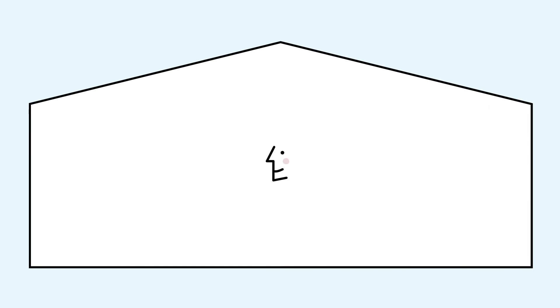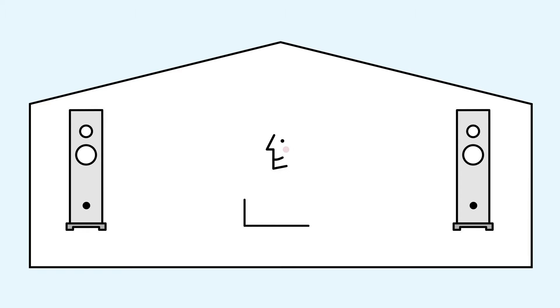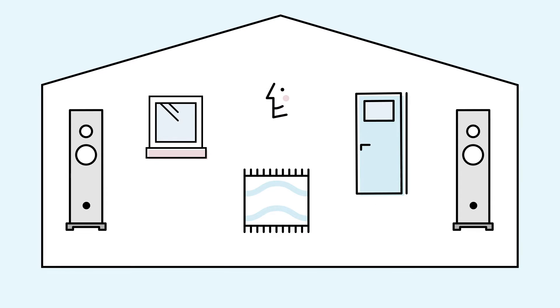Every Linn DS player features space optimization technology. Space optimization builds an acoustic model of your room based on your speakers, their positioning and the unique characteristics of your listening environment.